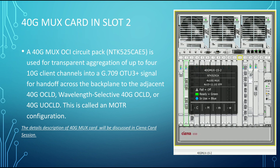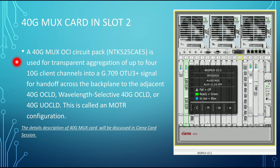The 40G MUX card in slot 2 is connected to the 40G OCLD card via the backplane. The 40G MUX OCI circuit pack is used for the transparent aggregation of up to four 10G client channels into a G.0709 OTU3 plus signal for handoff across the backplane to the adjacent 40G OCLD card. The MUX card aggregates services and converts them to the line signal. Detailed discussion will be in the next Ciena card session.